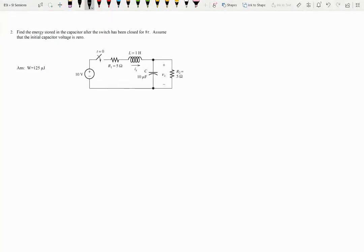All right, let's go take a look at question number two. So question number two, it's another circuit where we have an inductor, we have a capacitor, and we've got two resistors. And they say they want us to find the energy stored in the capacitor after the switch has been closed for a tau.